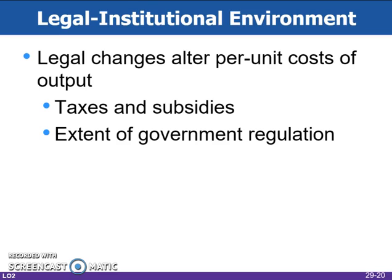A change in the legal institutional environment can also change per unit production costs and thus change aggregate supply. Higher business taxes increase costs for businesses and reduce short-run aggregate supply. Business subsidies lower production costs and can increase short-run AS. It is also costly for businesses to comply with government regulation — more regulation increases per unit production costs and shifts the AS curve to the left, while deregulation will reduce per unit production costs and shift the AS curve rightward.